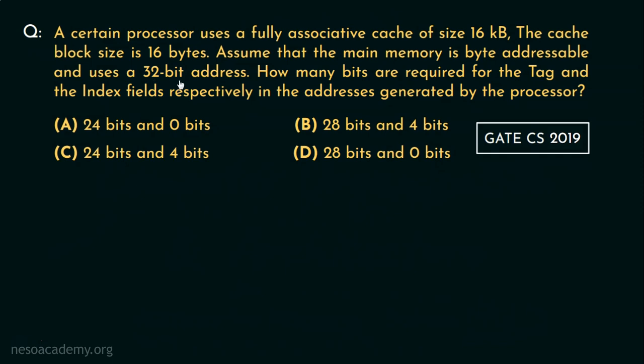That means the smallest addressable unit of the memory is 1 byte and the physical address is 32-bit. Now they are asking us how many bits are required for the tag and the index fields respectively in the addresses generated by the processor. This is the sentence where the question becomes the odd one. We are talking about fully associative memory mapping, then again in the question itself, the bits required for the index fields are also being asked.